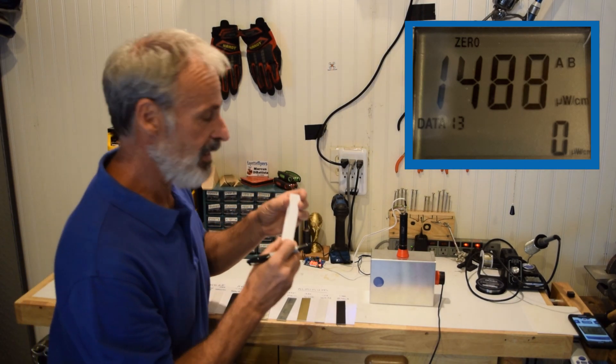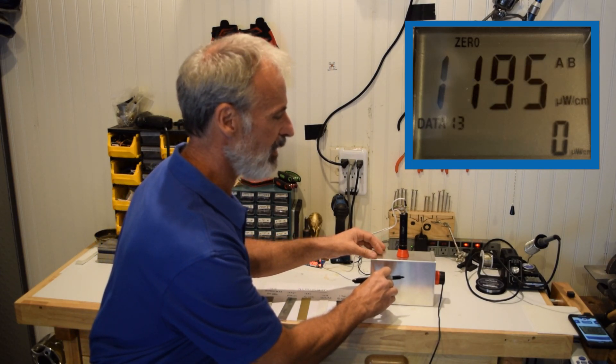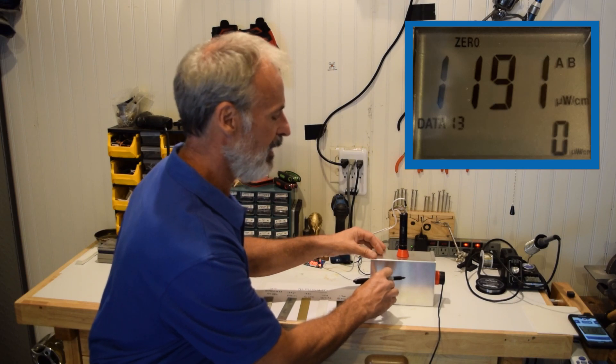But if you take that same HDPE and you paint it white, you can see the negative effect that painting has. 1,195.